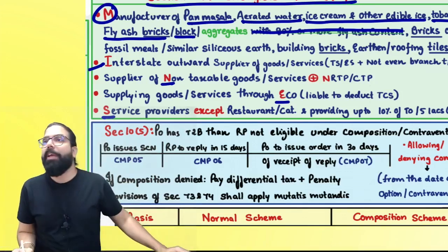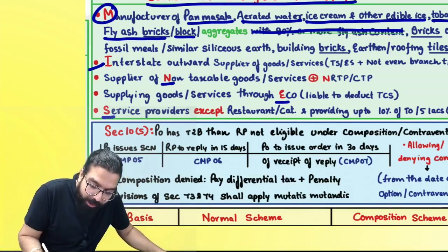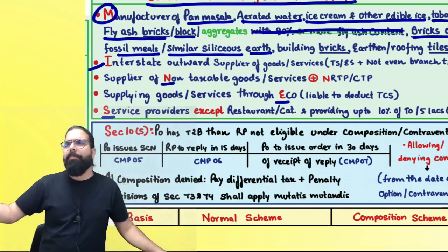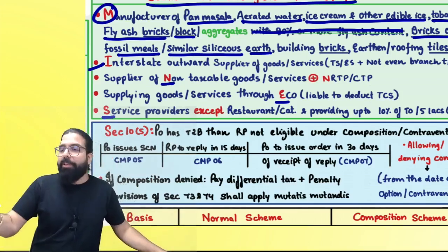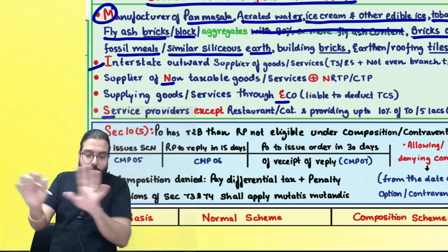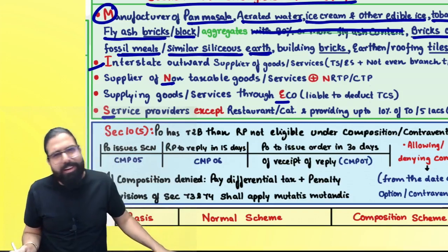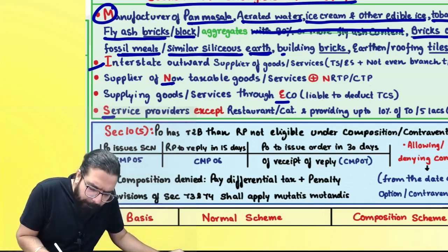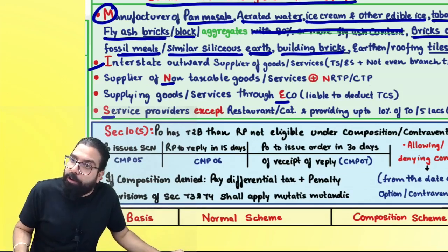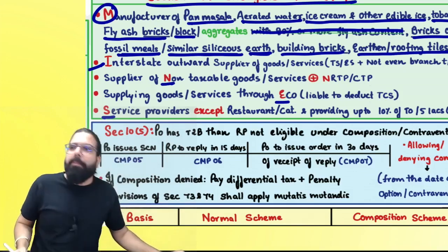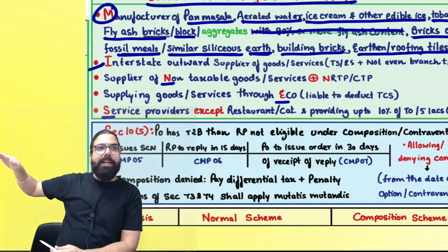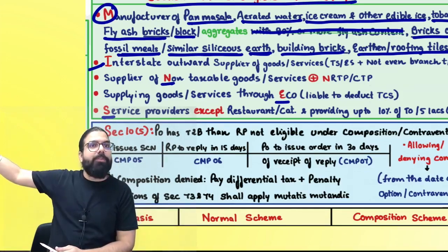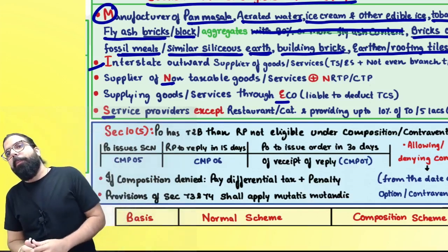That is the only amendment in composition — all fly ash brick, block, and aggregate manufacturers are ineligible. Also ineligible are manufacturers of bricks of fossil meal or similar siliceous earth (yellow-color bricks made from mountain fossil remains), building bricks (brown-color bricks), and earthen or roofing tiles (brown-color tiles fitted on roofs). Important: if I am a TRADER in pan masala — am I eligible? Yes — manufacturers are ineligible, but traders are always eligible.